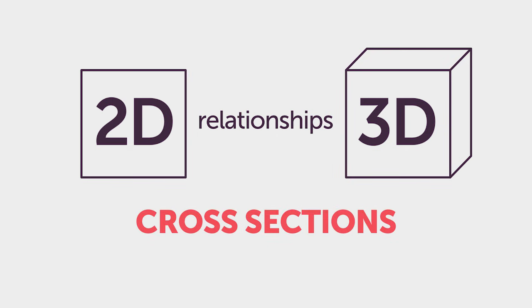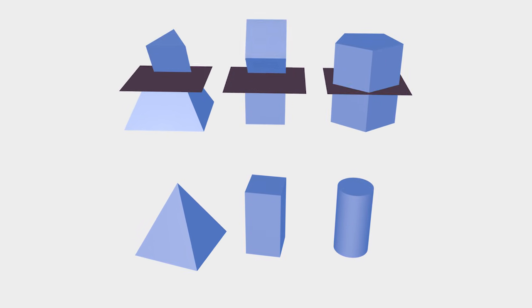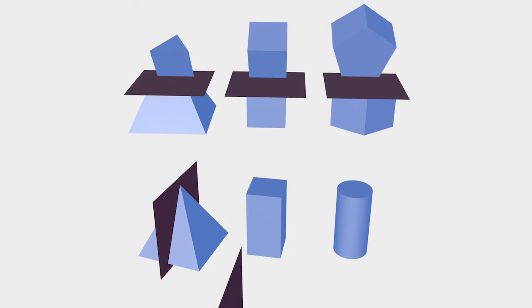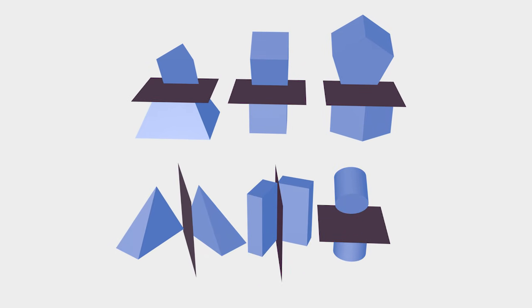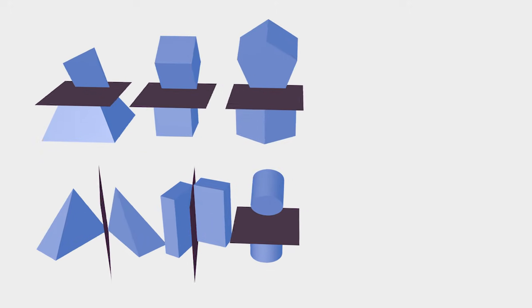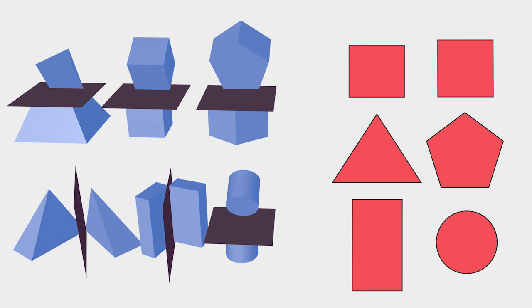As stated before, a cut made to a three-dimensional object will produce a two-dimensional figure known as a cross section. With each different three-dimensional figure, a different cross section will be formed, depending on the cut. When identifying cross sections of three-dimensional figures, it is important to understand the cut of the figure and envision the two-dimensional figures that would be formed.